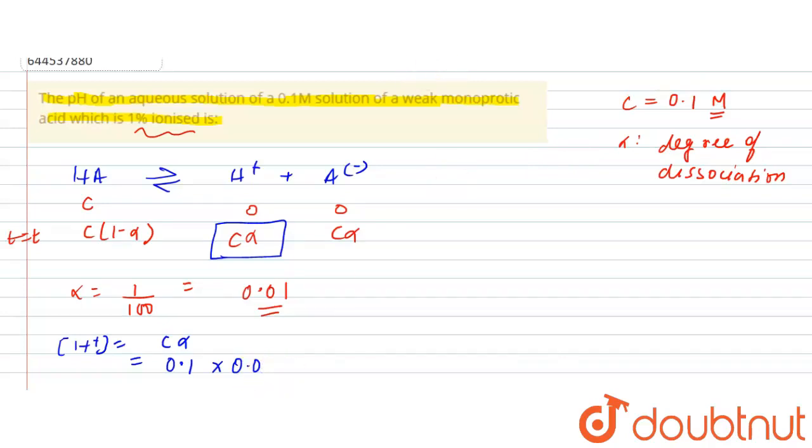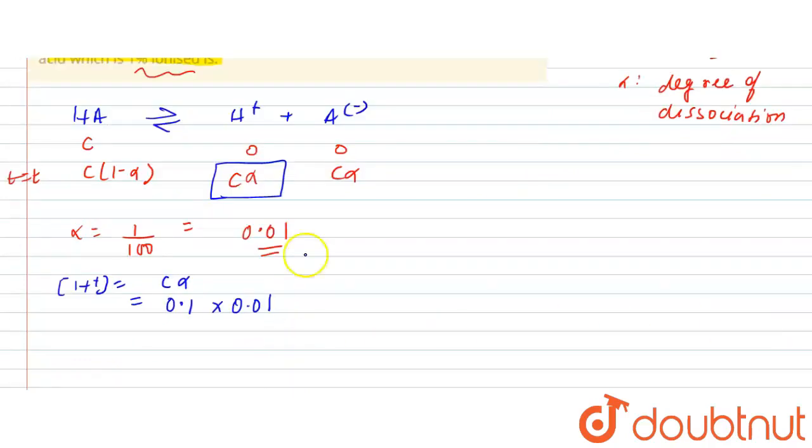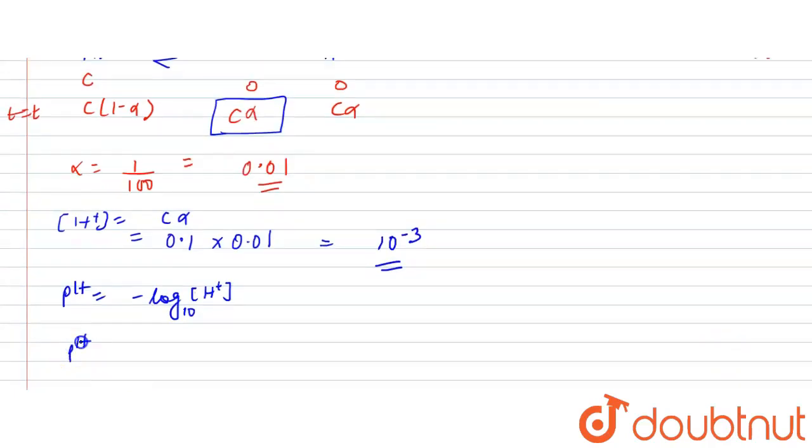It will be 0.001. Now after this you can easily say that the concentration of H+ will be 10 to the power -3. Now you know very well that pH is given by -log of H+ to the base 10. So what will be the pH here? pH will be equals to -log base 10 of H+, which is 10 to the power -3.